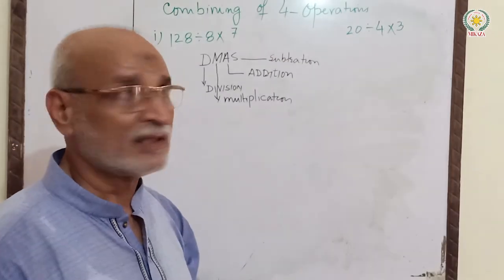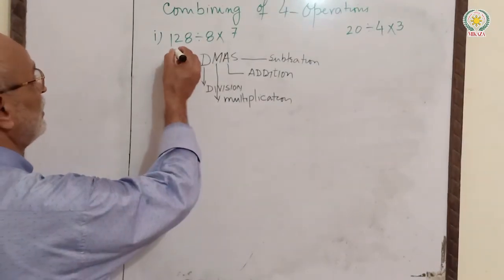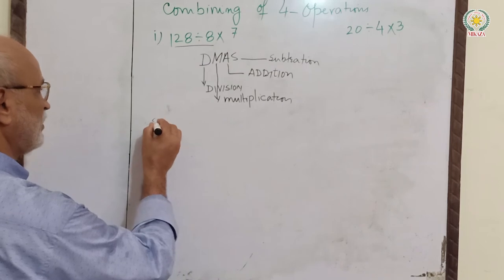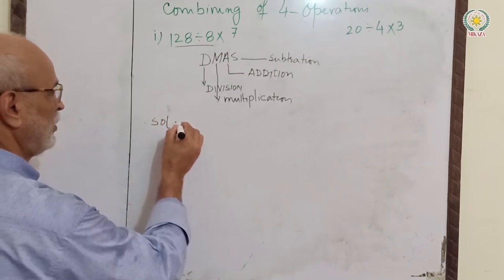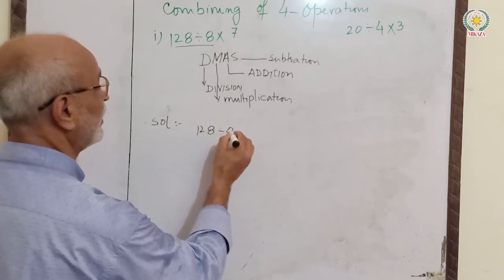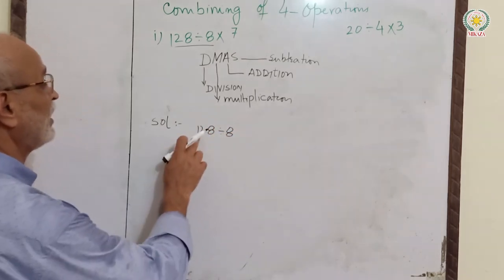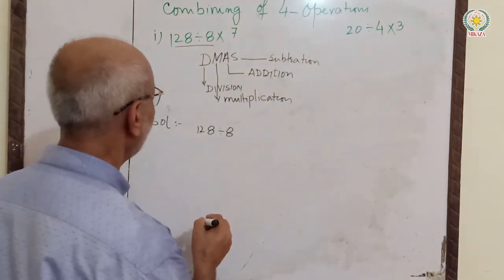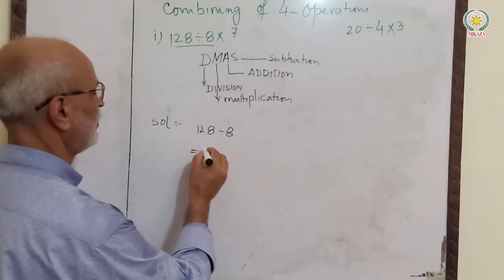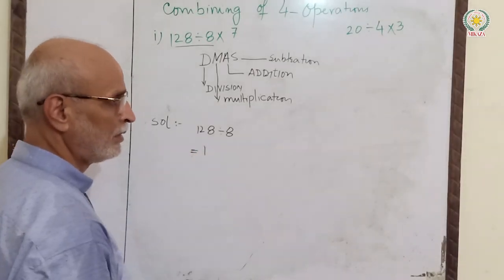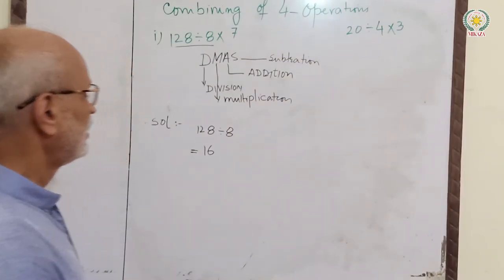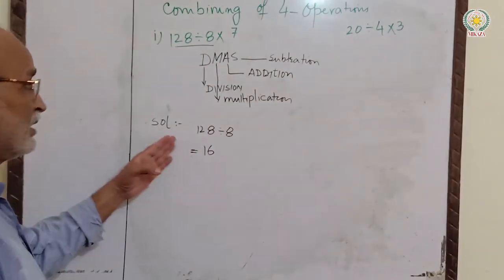Let's solve a problem. 128 divided by 8. What is the answer? 128 divided by 8 equals 16.